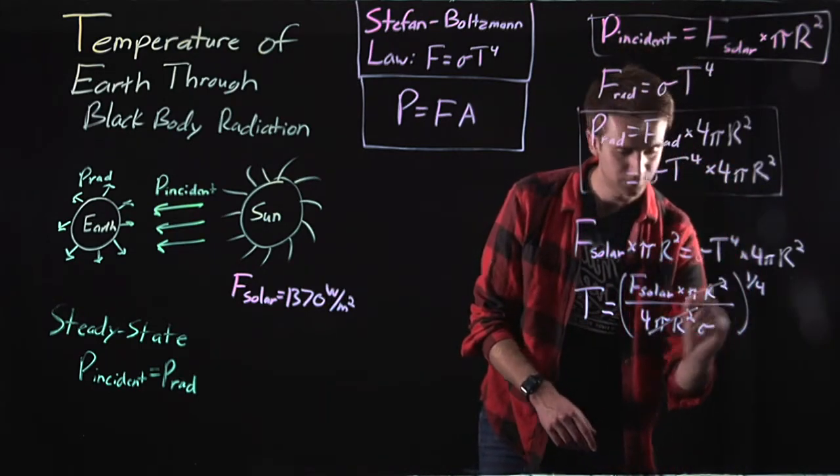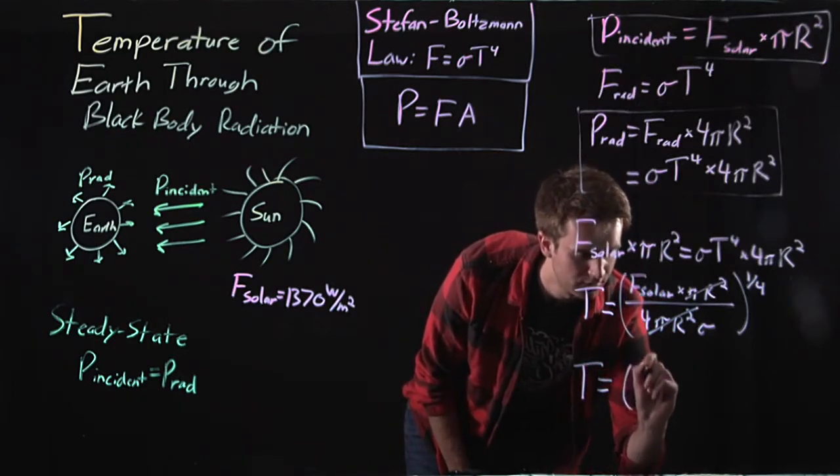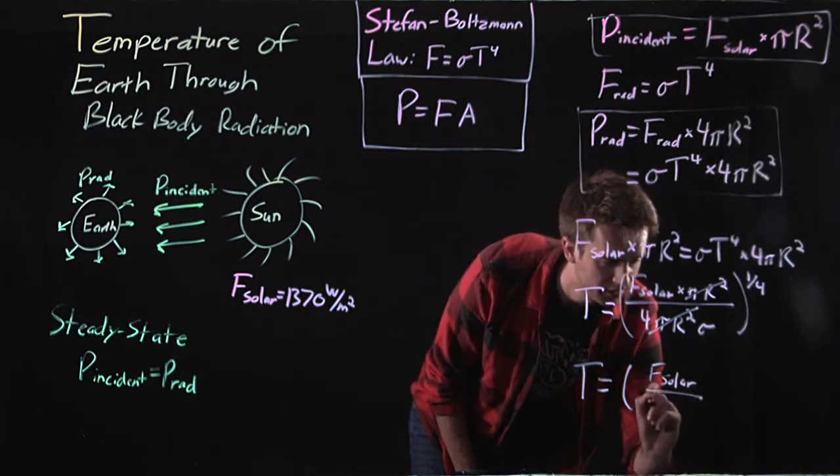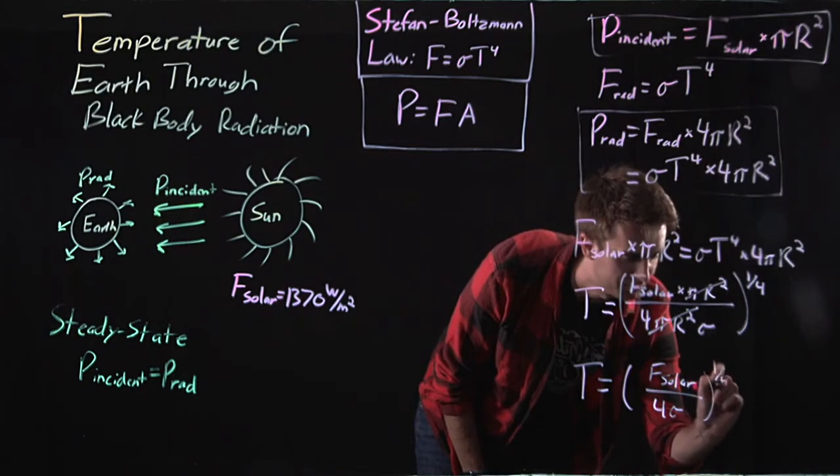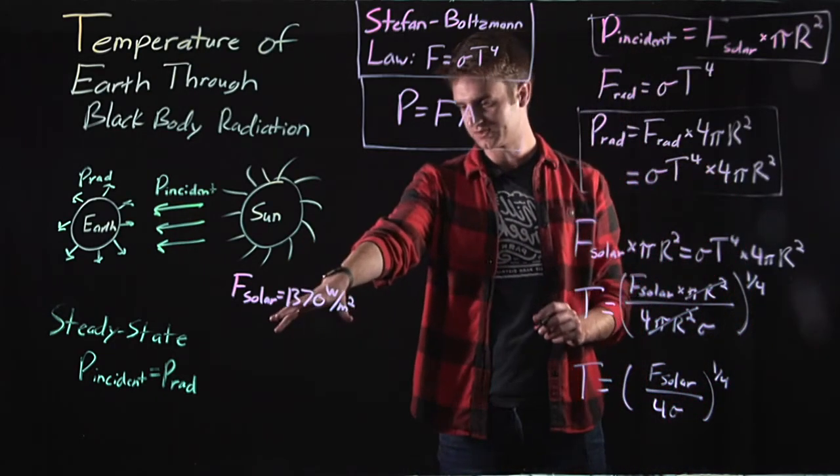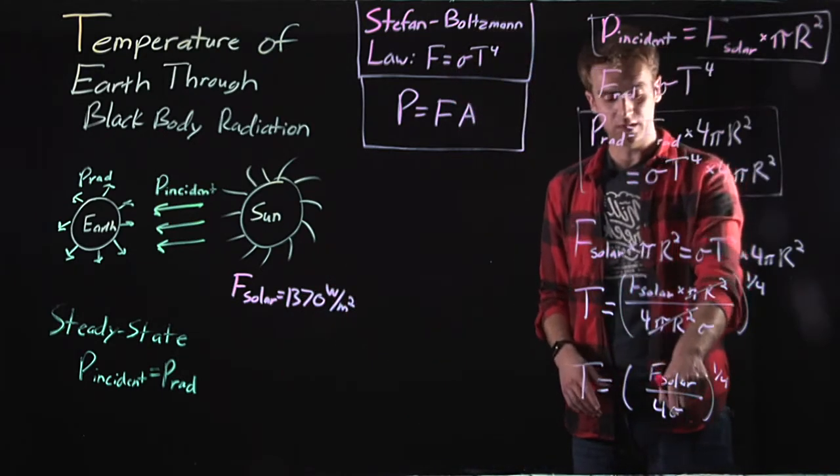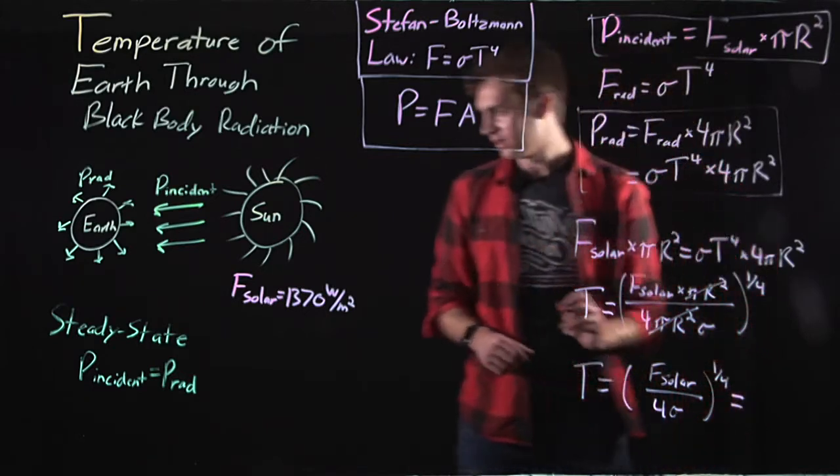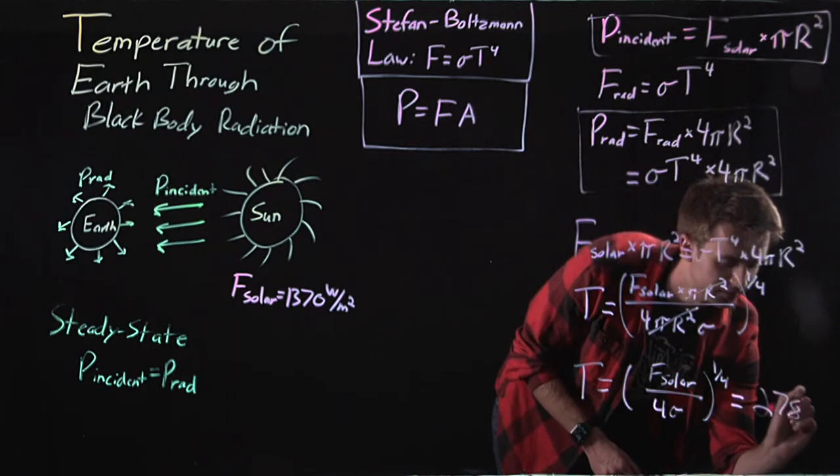And so we're left with T equals F solar divided by 4 sigma, and that's to the one-fourth power. And so if we take our solar flux here, 1370 watts per meter squared, and we plug it in here, and we take sigma and we plug it in, we get a surface temperature of 278 degrees Kelvin.